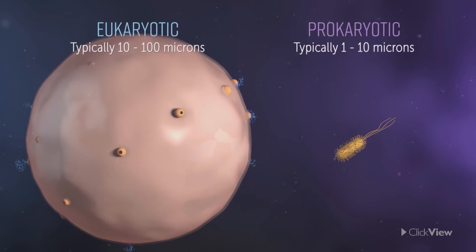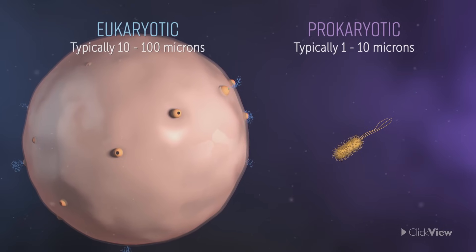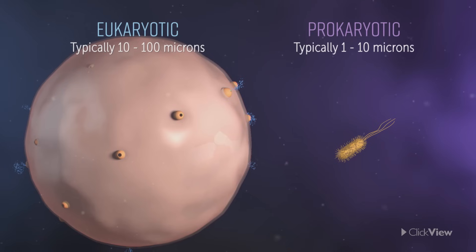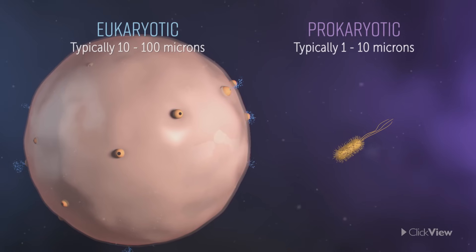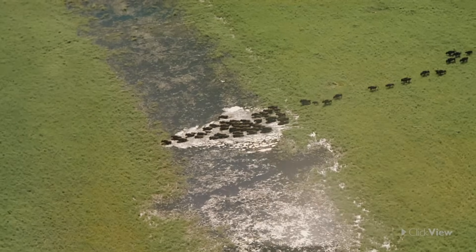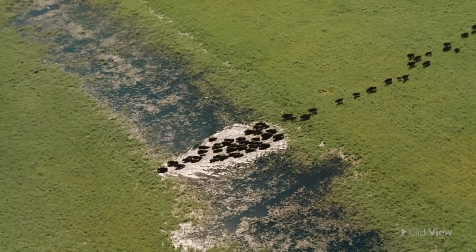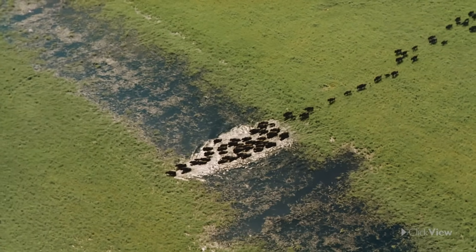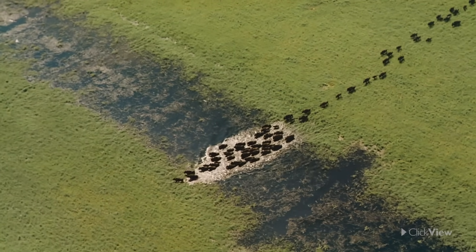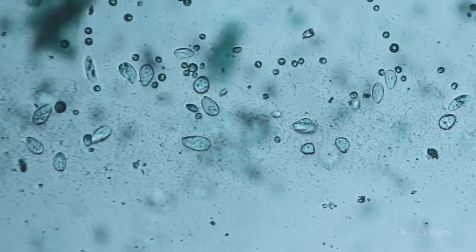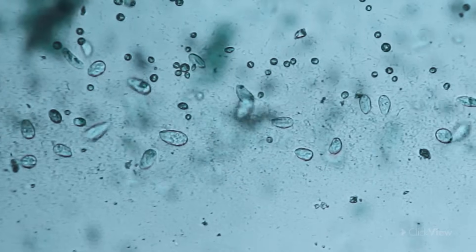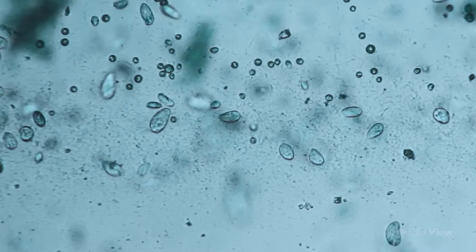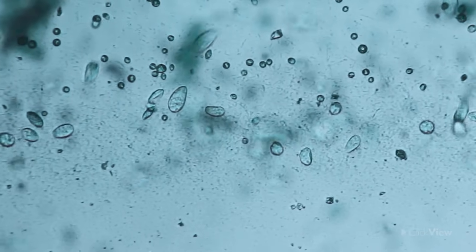Another difference between eukaryotic and prokaryotic cells is their size. Eukaryotic cells are generally larger than prokaryotic cells. Eukaryotes are mostly, although not entirely, multicellular organisms, whereas prokaryotes are always single-celled or unicellular organisms.